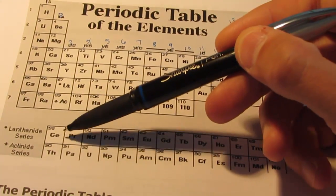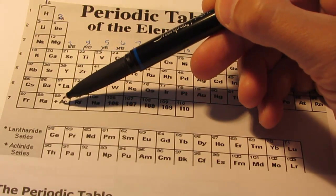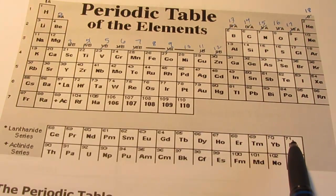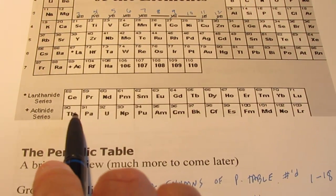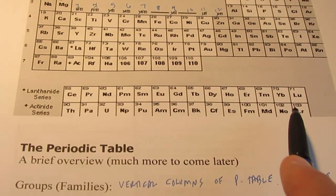Now, keep in mind, these two rows at the bottom fit in this square and this square. So, these elements are all a member of the sixth period. And these elements are all a member of the seventh period.